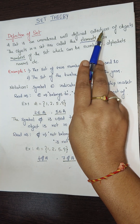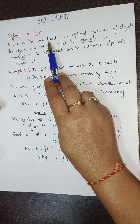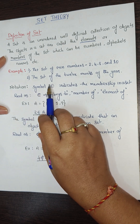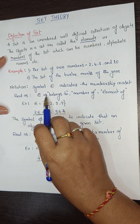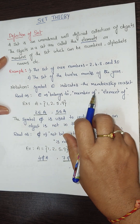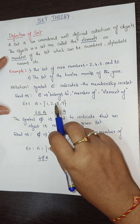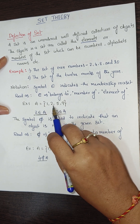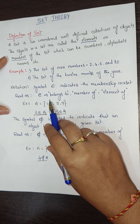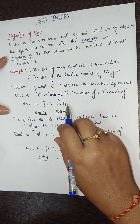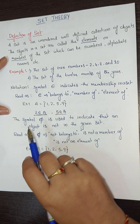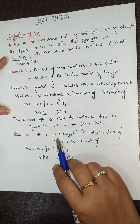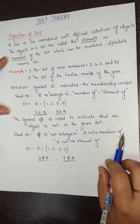A set is a well-defined collection of objects, but order does not matter — it may be ordered or unordered. The symbol '∈' means 'belongs to', also read as 'member of' or 'element of'. The symbol with a slash through it means 'not belongs to', or 'is not a member of', or 'is not an element of'.